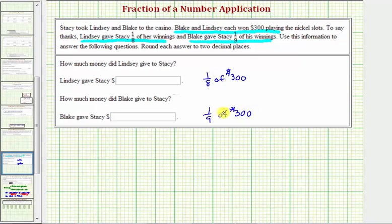We're converting English into mathematics - 'of' means multiply. So to find 1/8 of 300, we want to find the product of 1/8 and 300. And to find 1/9 of 300, we want to find the product of 1/9 and 300.